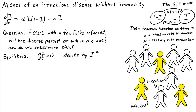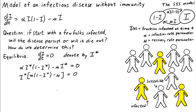Let's denote the equilibria by i*. If i(t) equals i*, then di/dt should be zero. Plugging this into the differential equation, we determine that alpha times i* times (1 minus i*) minus mu times i* must be zero.